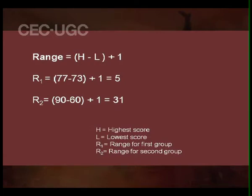Let us calculate the range and standard deviation for two groups of scores: one group with scores from 73 to 77, and another from 60 to 90. Using the formula H minus L plus 1, the range for the first group is 77 minus 73 plus 1, which equals 5. The range for the second group is 90 minus 60 plus 1, which equals 31.